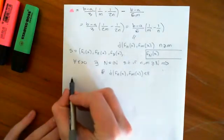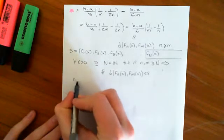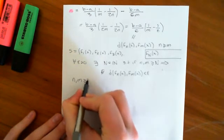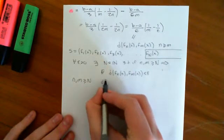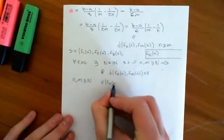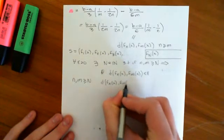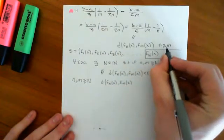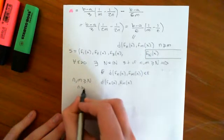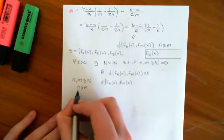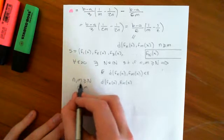So imagine we've found such a big N, and we have chosen little n and little m to be greater than or equal to this big N. Then what we know is that the distance between F little n of x and F little m of x, and again we'll assume that little n is greater than or equal to little m, so if one is bigger than the other, then little n is the one that's bigger.